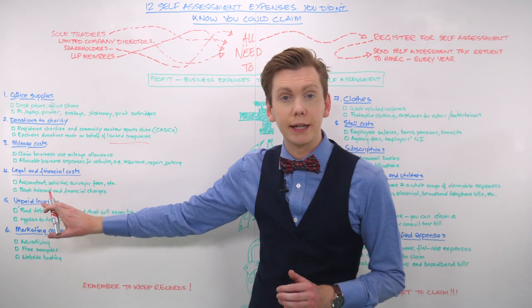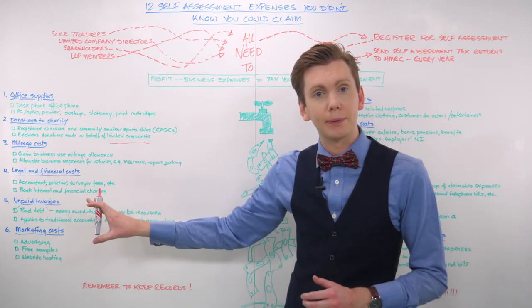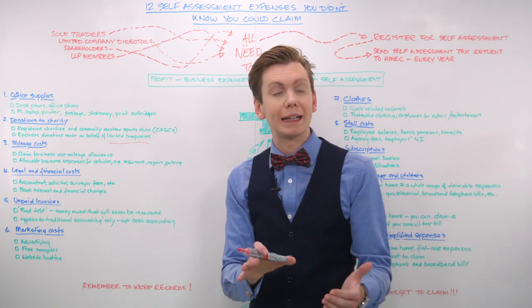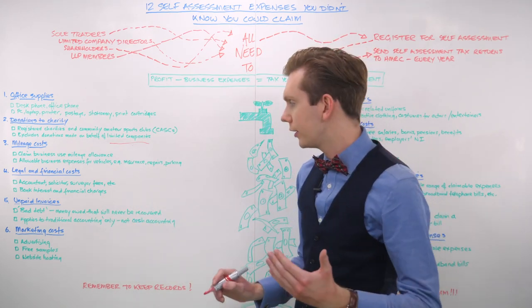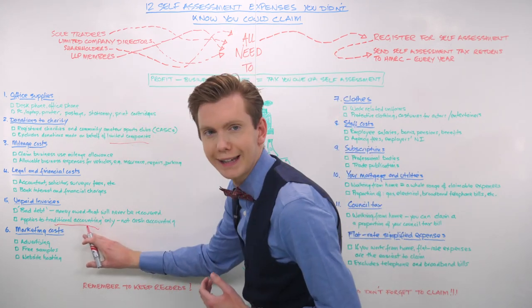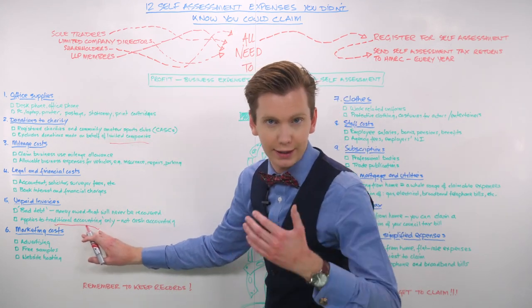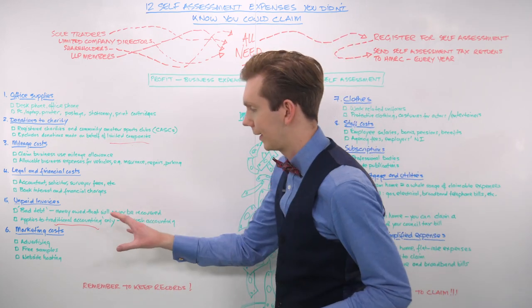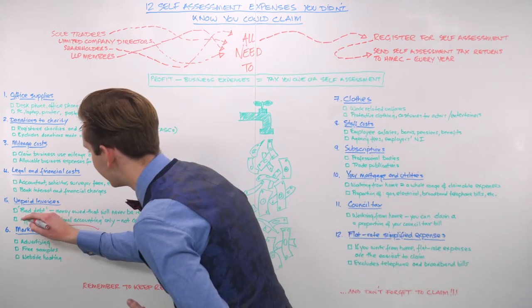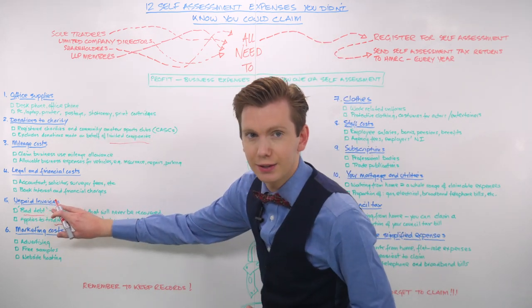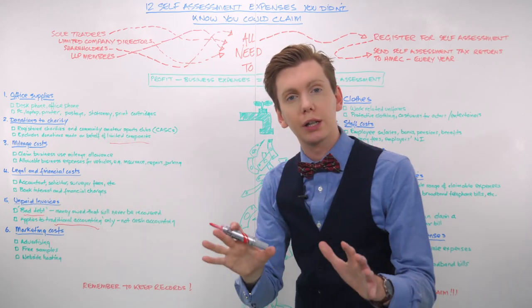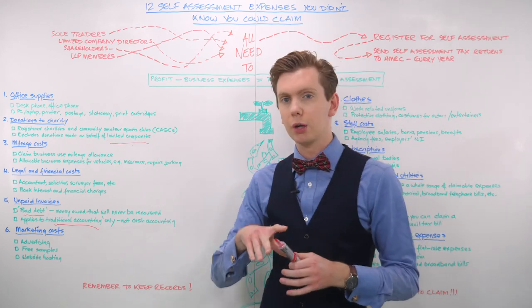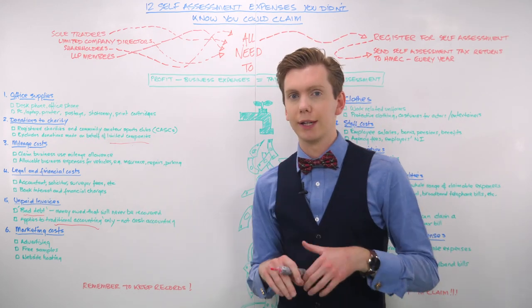Number five, unpaid invoices. This is probably one of the most beneficial and unused expenses that you should be claiming as a business owner. If you are using what is called traditional accounting, HMRC allows you to claim for any amount of money included in your turnover that you aren't planning on receiving. What this is called is bad debt. And the only prerequisite for including it in your expenses is that you must be sure that these invoices will never be recovered from a customer in the future.